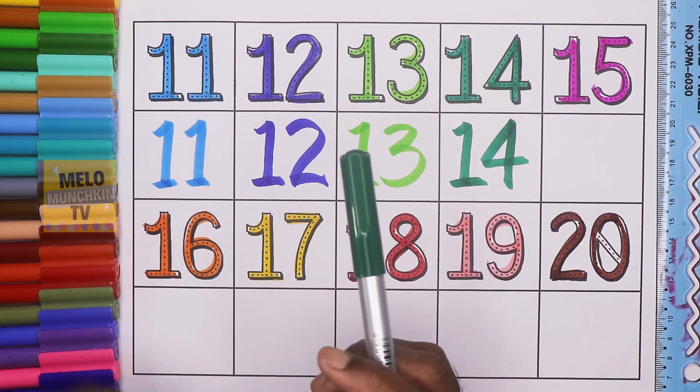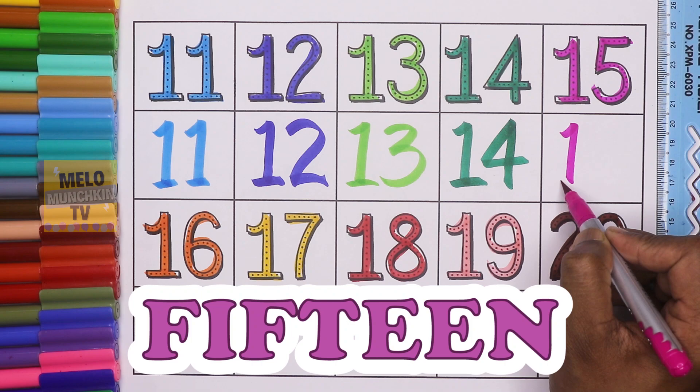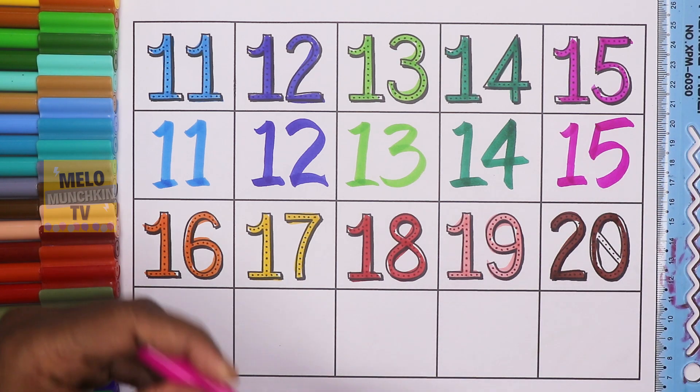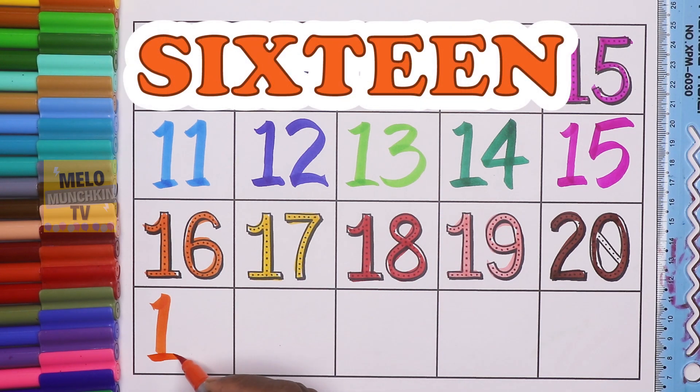This is dark green color. 15, F, I, F, T, E, E, N, 15. This is dark pink color. 16, S, I, X, T, E, N, 16.